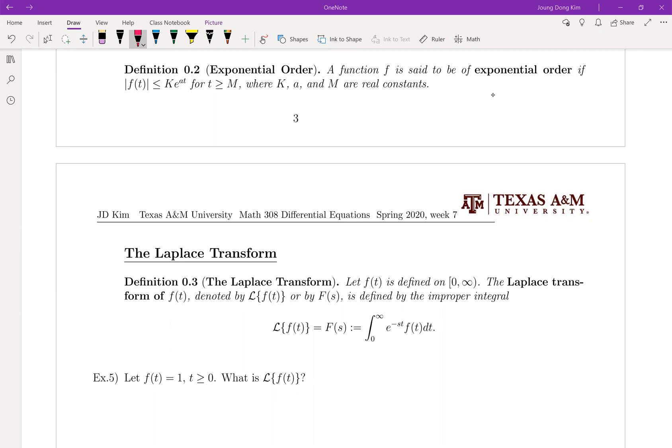Exponential order means it's not the upper bound, but as long as your absolute value of your function value is less than or equal to k times e to the at form, then we're going to say there is the exponential order. This is an important definition for the existence. We're going to talk about this later.